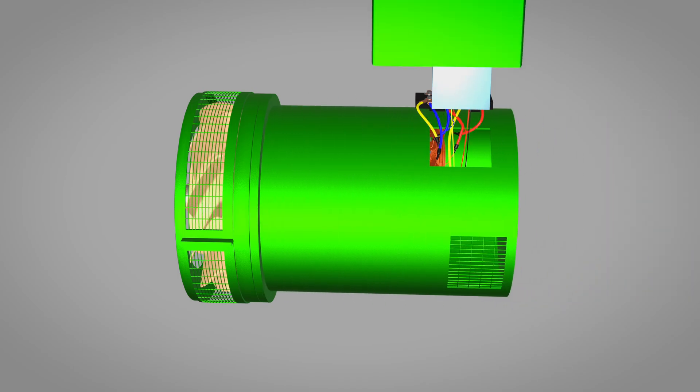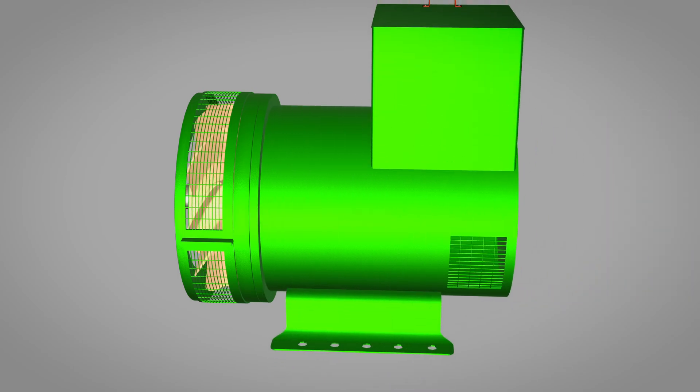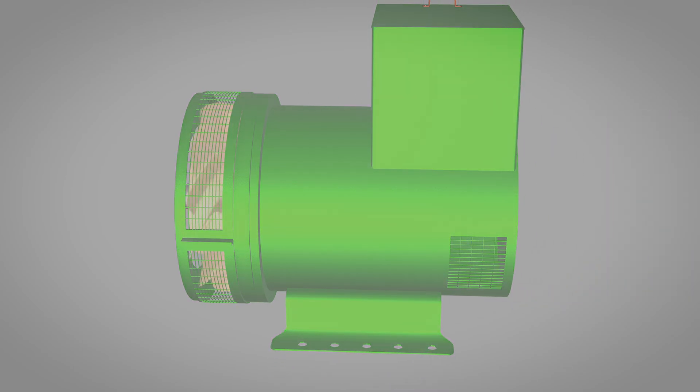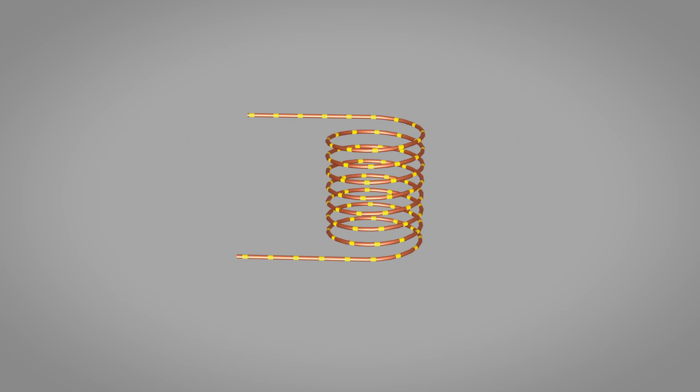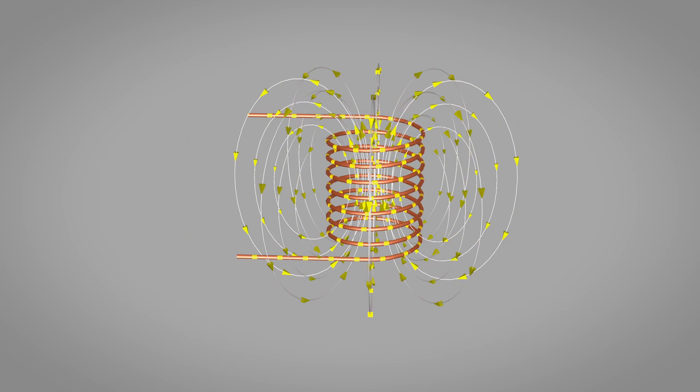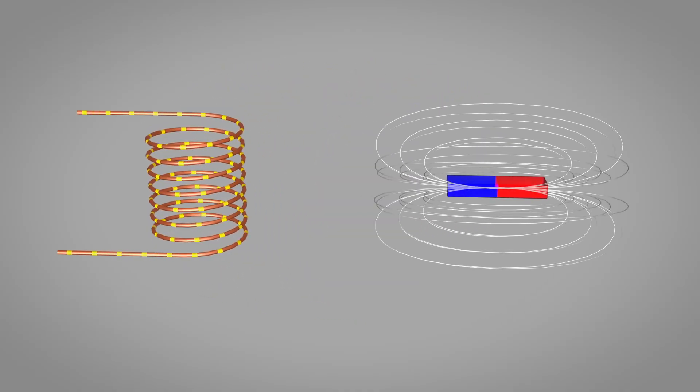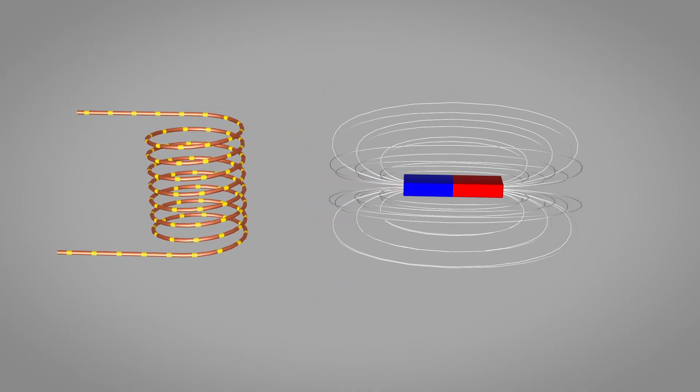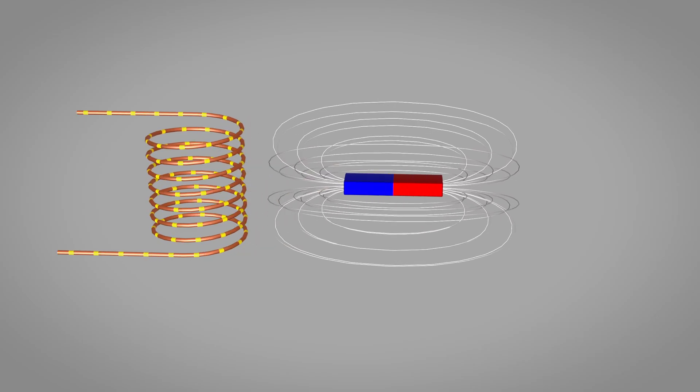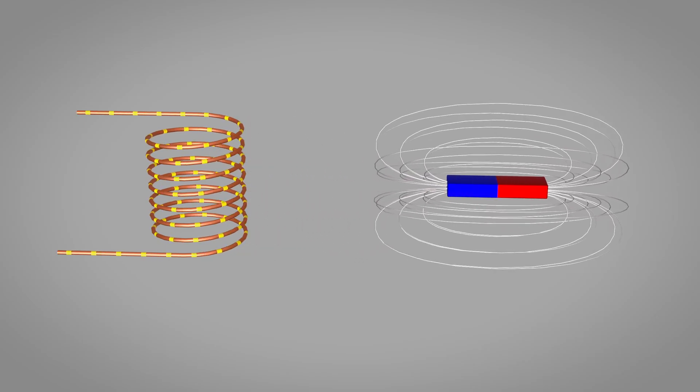Before we explore the alternator, let's understand fundamental laws of electromagnetism that make it all possible. When electric current flows through any conductor, it creates a magnetic field around that conductor. When a magnetic field around a coil of wire changes in strength or direction, it induces an electric current in that coil. This reciprocal relationship between electricity and magnetism is the foundation of all electrical generators.